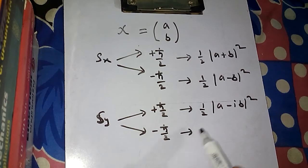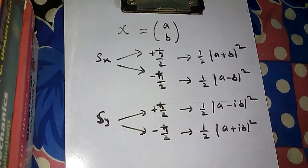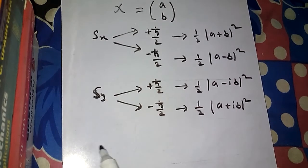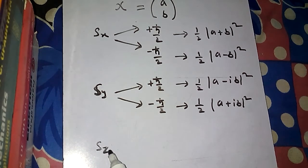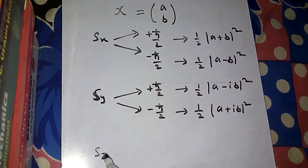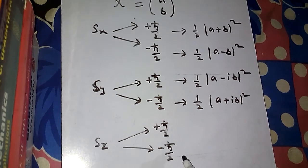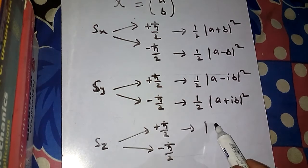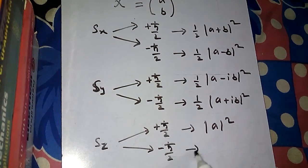You can also find S_z — the Z component of the spin — on this function. If you measure the Z component, two results are again possible: plus ℏ/2 or minus ℏ/2. The probability that you get plus ℏ/2 when measuring S_z is simply |a|², and the probability that you get minus ℏ/2 when measuring S_z is simply |b|².